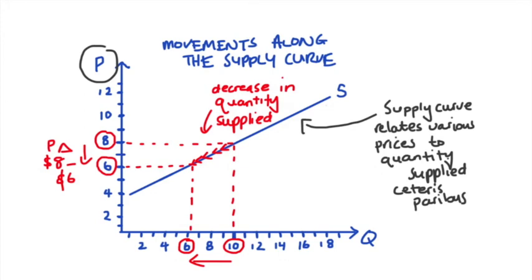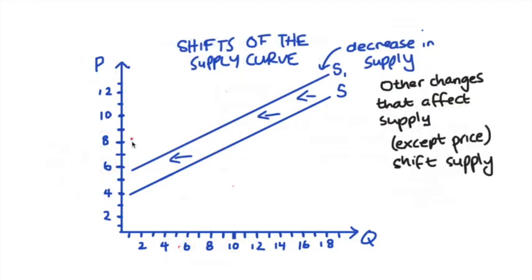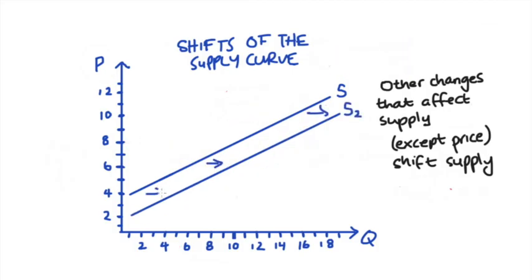If anything else happens that affects supply apart from changes in the price then we shift the supply curve. A decrease in supply shifts the curve to the left and an increase in the supply curve shifts the curve to the right.